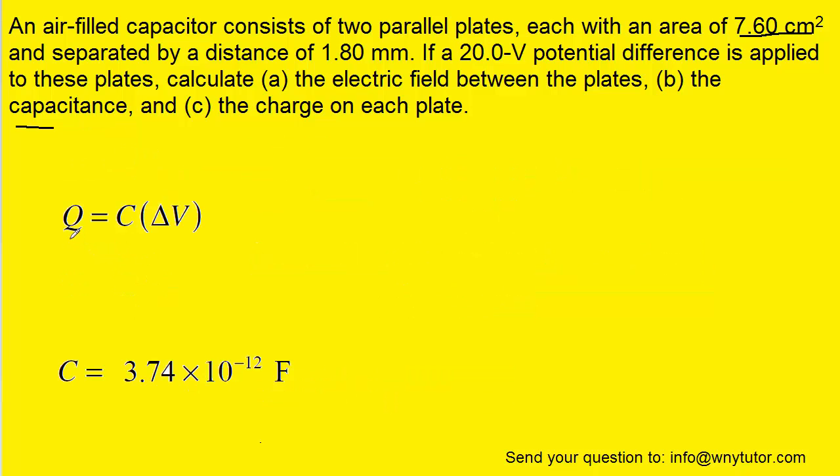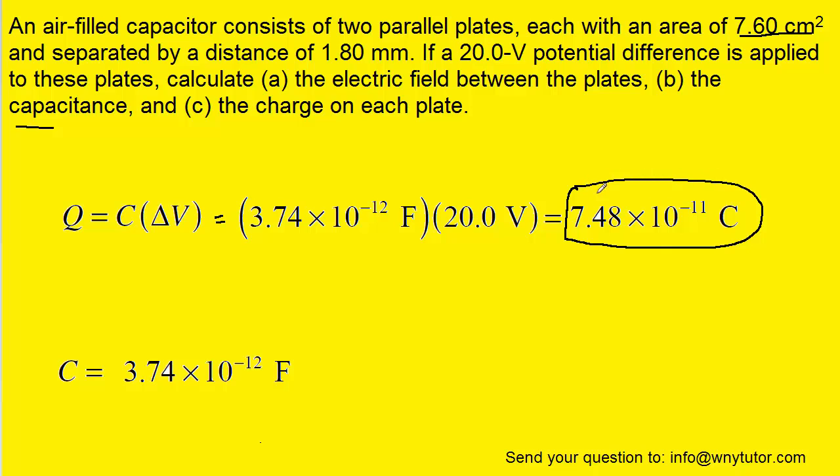Finally, for part C, to calculate the magnitude of charge on each plate, we can simply multiply the capacitance by the potential difference. We've just figured out the capacitance, so we can plug that in. And the potential difference was 20 volts. And when we compute that, we get approximately 7.48 times 10 to the minus 11 coulombs.